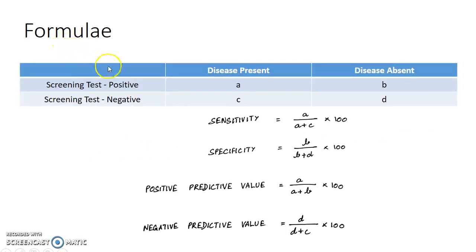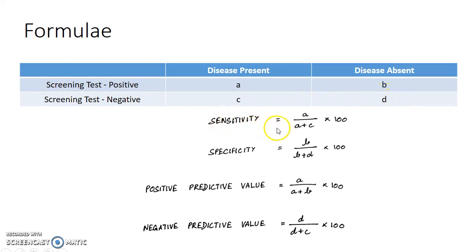Now let us see about some important formulae. In this tabular column: A means disease is present and the screening test is positive, i.e. true positive. B means disease is absent but the screening test is positive, i.e. false positive. C means disease is present but the test is negative, i.e. false negative. D means disease is absent and the screening test is negative, i.e. true negative. Sensitivity = A / (A + C) × 100. Specificity = B / (B + D) × 100. Positive predictive value = A / (A + B) × 100. Negative predictive value = D / (D + C) × 100.